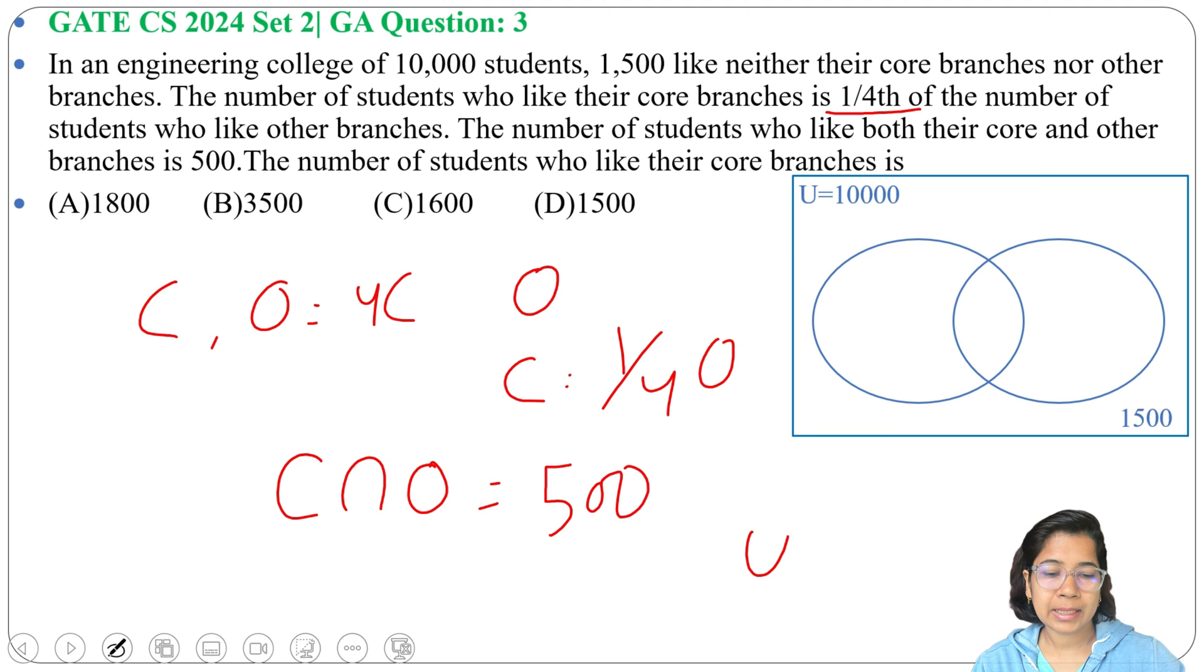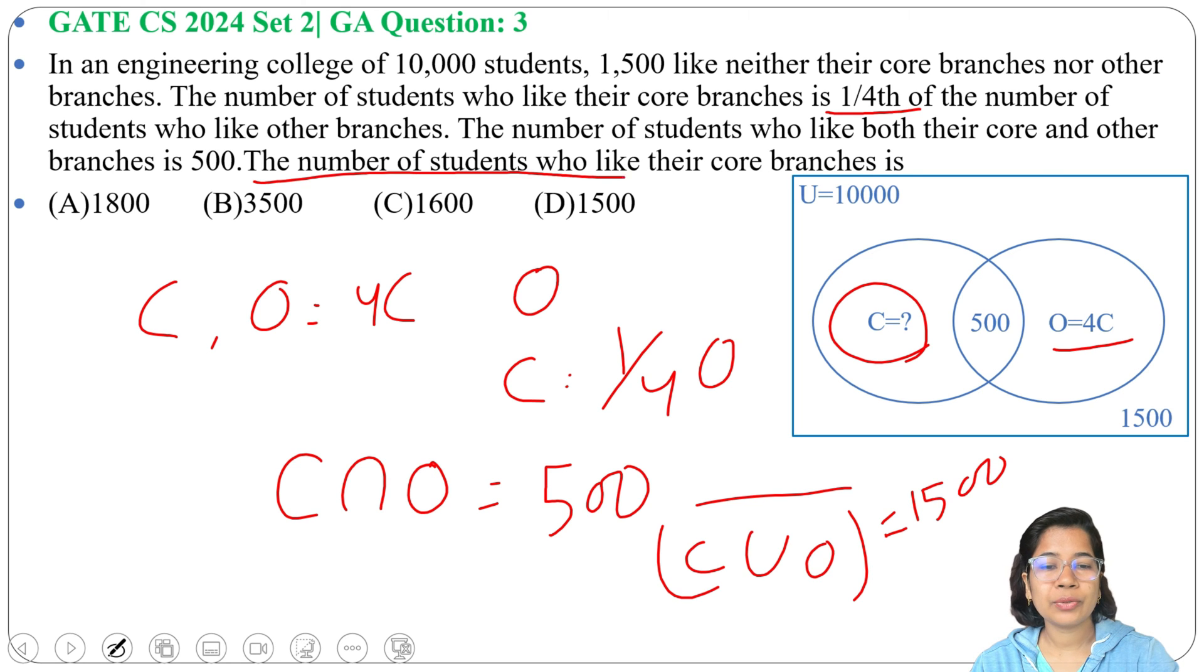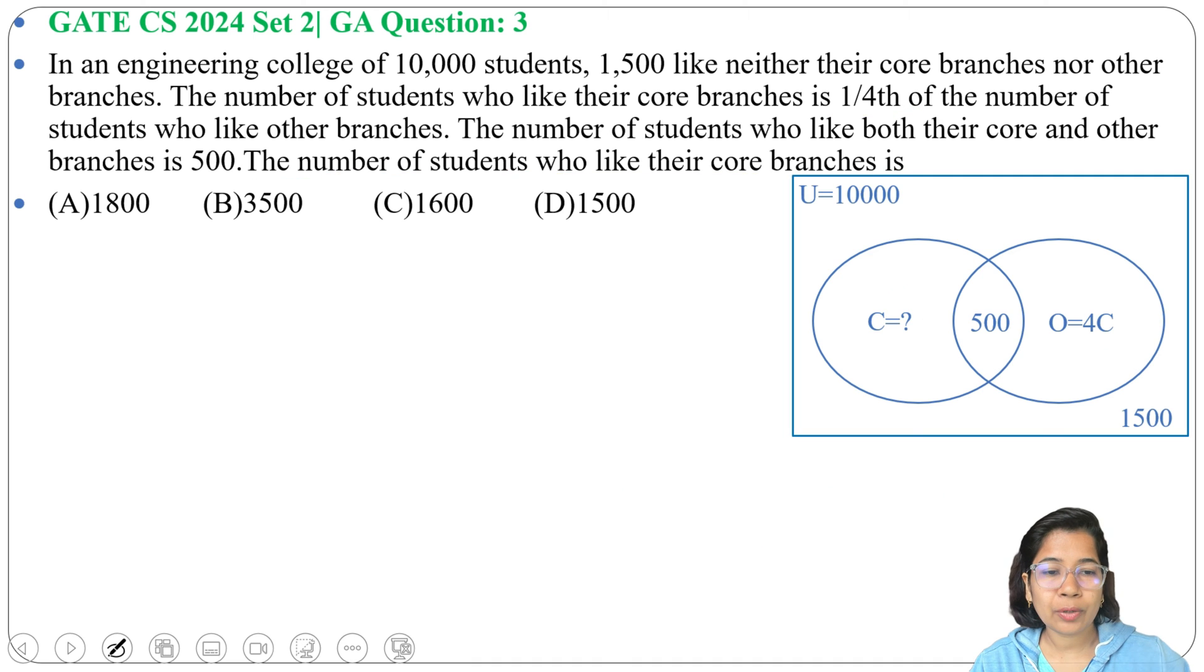We can say C union O complement is 1,500, and common students are 500 who like both core plus other branches. One set is C, another is O, and O equals to 4C - four times the students who like core branches. We need to find C. Four options are given.